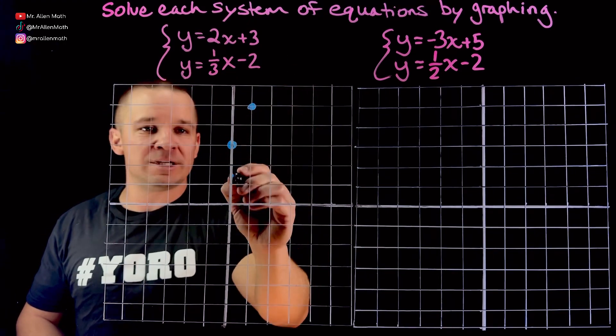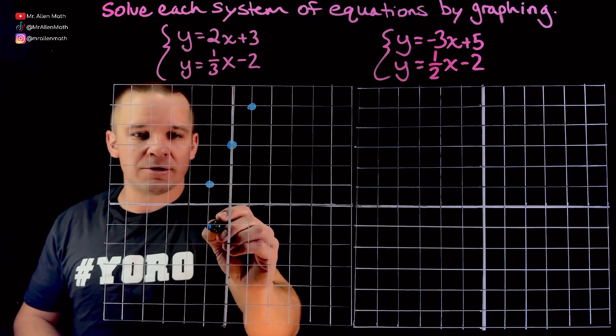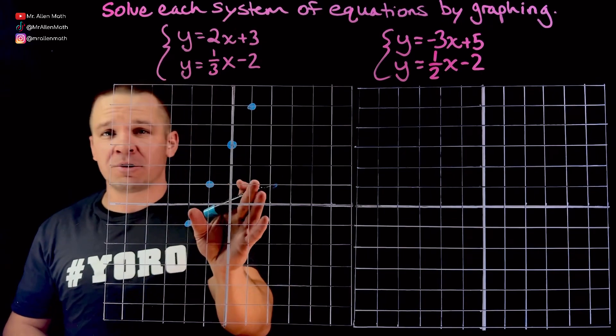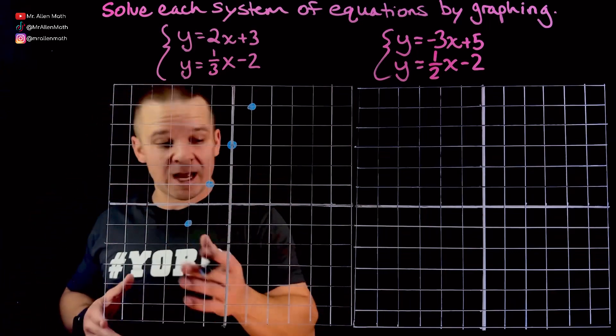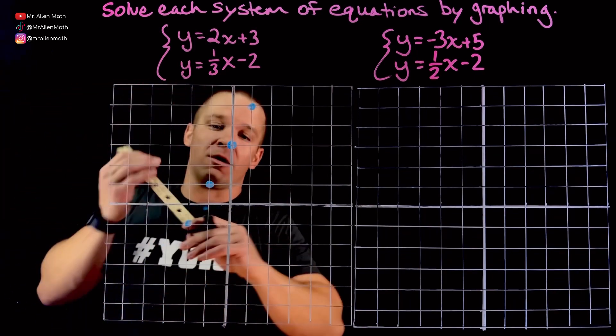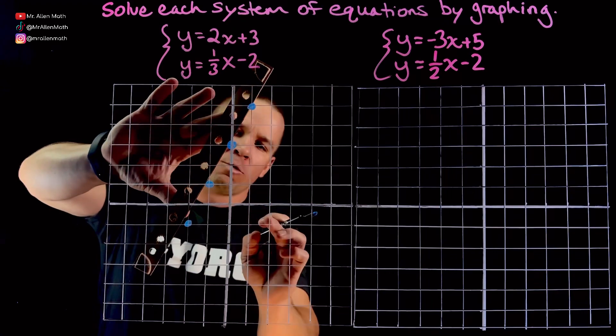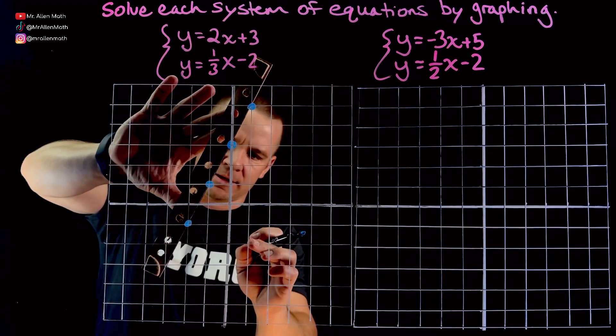I prefer to have these in slope-intercept form, and we already are, which is beautiful. So my y-intercept is 3. 1, 2, 3. I'm going to put a point right here, and my slope is 2, so I can go up 2 over 1. I'm going to be off the graph there, so I'll go down 2 to the left one, down 2 to the left one.